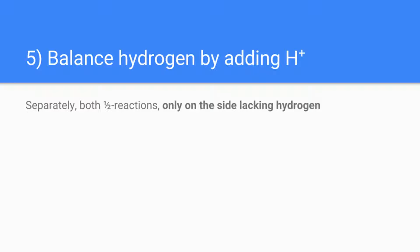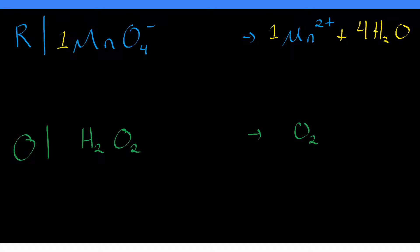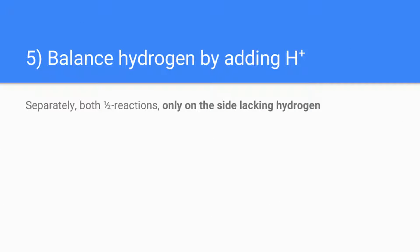Step five: balance hydrogen by adding H+. Identify the side of the reaction that lacks hydrogen and add H+ to that side. In the reduction half-reaction, there is no hydrogen on the reactant side but we have four water molecules on the right — that's eight hydrogens — so we add 8 H+ to the reactant side. In the oxidation half-reaction, we have two hydrogens on the left and zero on the right, so we add 2 H+ to the product side. We've now balanced all the elements, but we are not done.